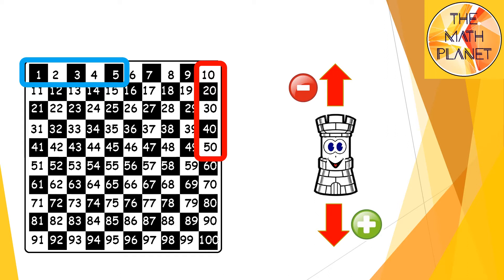Also, if you select any row from the hundred chart, you will notice that as you go to the left, you subtract ones and as you go to the right, you add ones. Since today we're concerned about subtraction, I will only move in two directions: up and to the left.